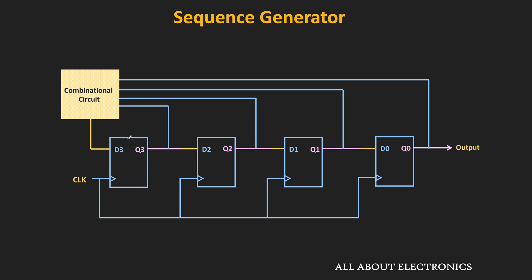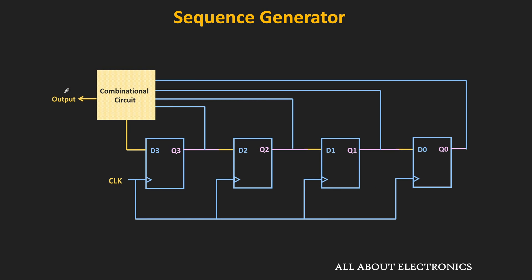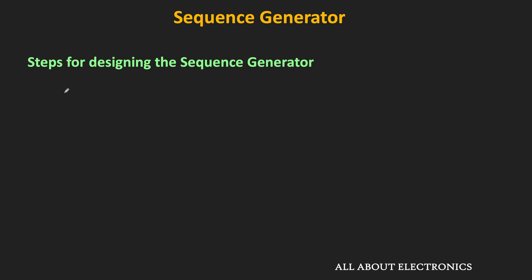In this method, the output of each flip-flop is connected to the combinational circuit, and the output of the combinational circuit is fed back to the input. We can get the required sequence at the output of any flip-flop, or at the output of the combinational circuit — we can tap the sequence from anywhere. Now let us see the steps required to generate a particular sequence. First, based on the length of the sequence, find the minimum required number of flip-flops.